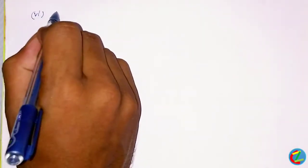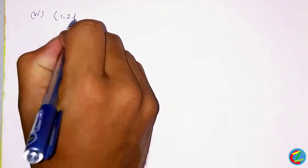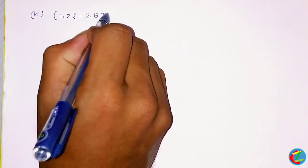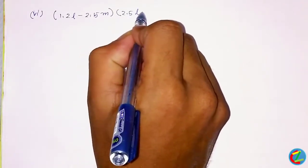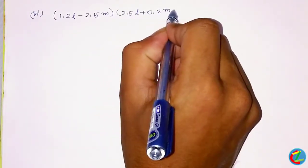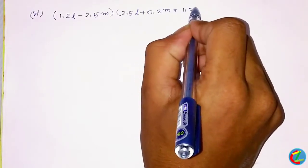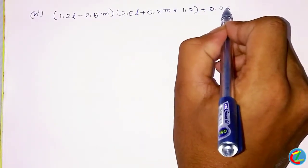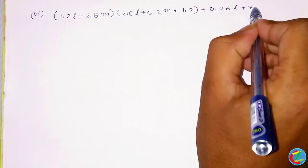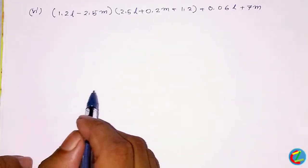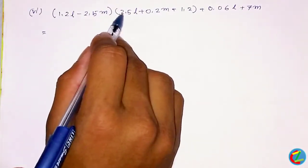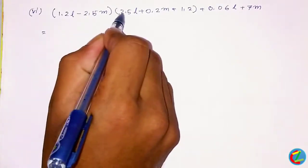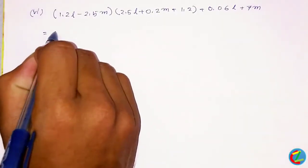So we can see here: this is 1.2L minus 2.5M, whole into 2.5L plus 0.2M plus 1.2, whole plus 0.06L plus 7M. What do we do with this? We have 1.2L and 2.5L.